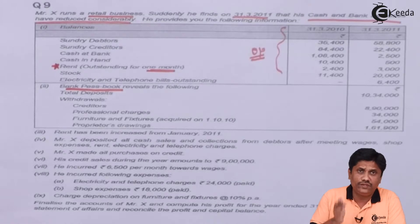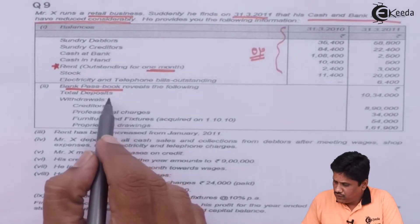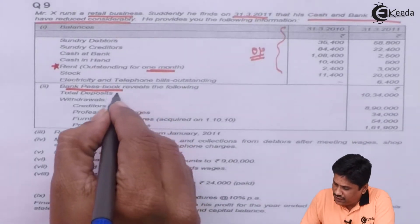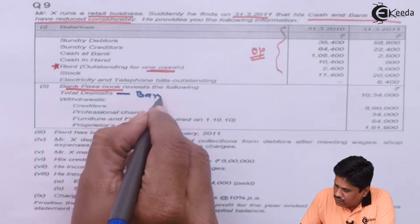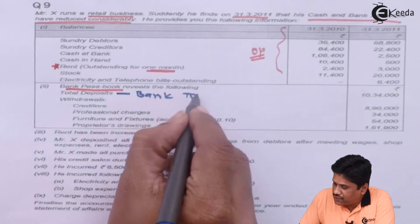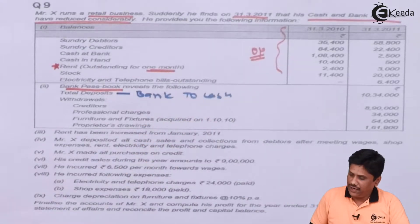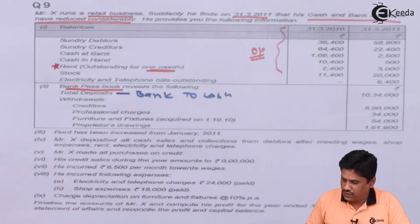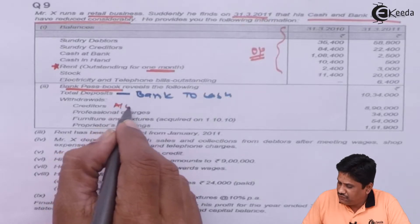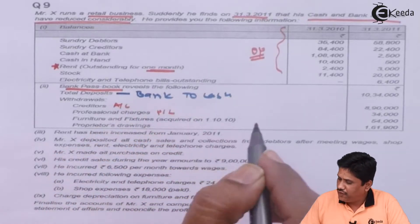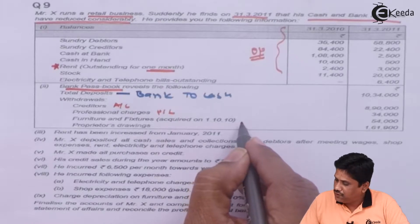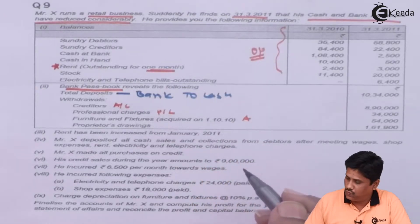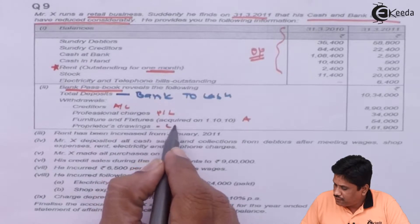We will prepare the cash book with cash and bank columns. Total deposits are 10,34,000. The entry for deposit will be bank to cash — a contra entry. Withdrawals are for creditors, professional charges, furniture and fixture, and proprietor's drawings. We will give the respective account effect. Professional charges go to the P&L account. Furniture and fitting was acquired on 1st October 2010, so it will be shown as an asset, and that date has relevance for depreciation.